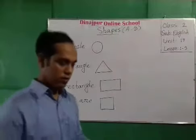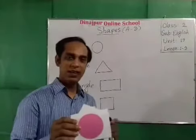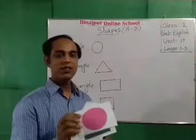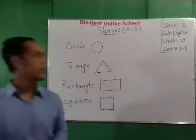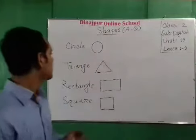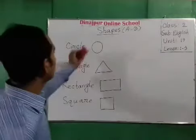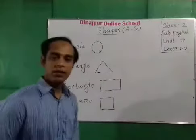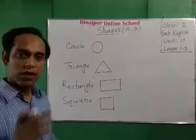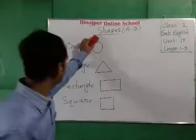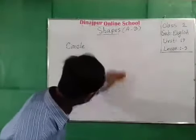Okay students, I think I was missing one — this is circle. Okay students, now I will remove the drawing pictures.